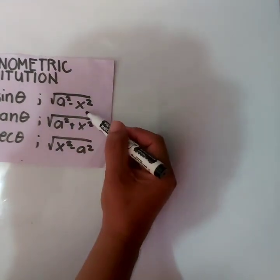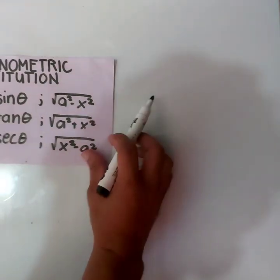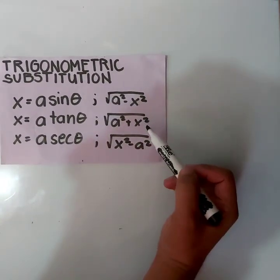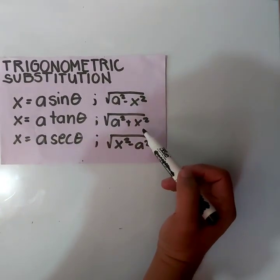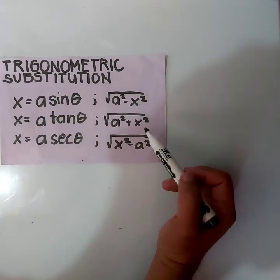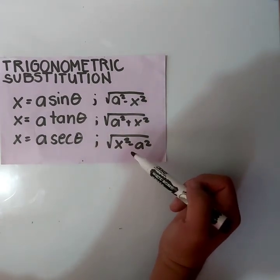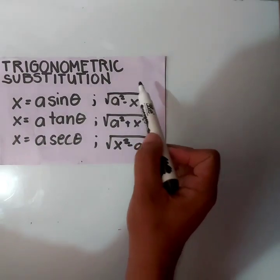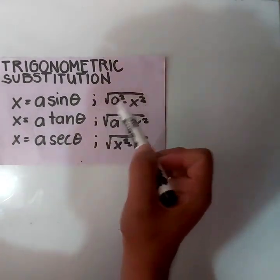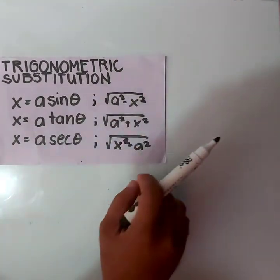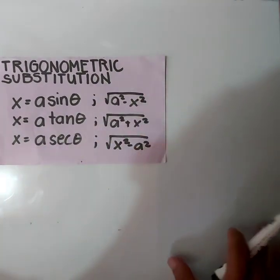For the form with square root of a squared minus x squared, we have x equals a sine theta. For square root of a squared plus x squared, we have x equals a tan theta. And for square root of x squared minus a squared, we have x equals a secant theta. It should involve a square root. So let us have our next example.